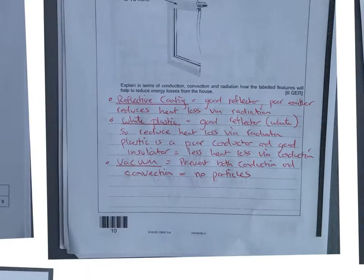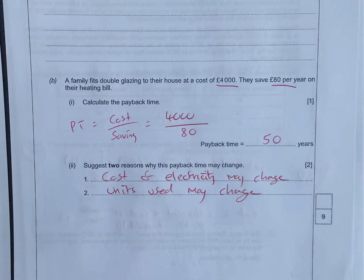This question is continued then with the payback time. You're not given this equation, so we're going to have to find a way to remember payback time equals cost over saving. It is just a bit of a numeracy skill where you're going to see how many times 80 goes into 4000 to get your payback time, which is 50 years.